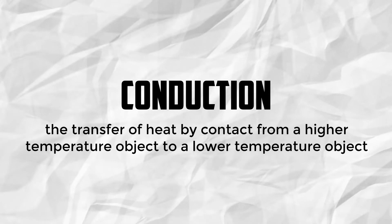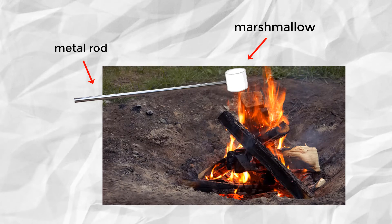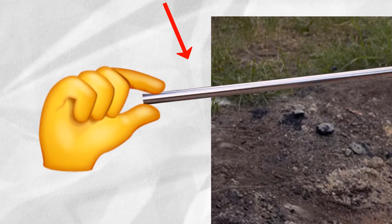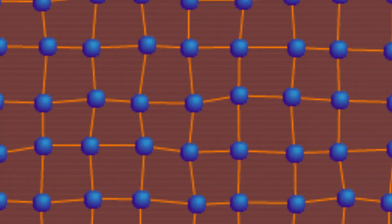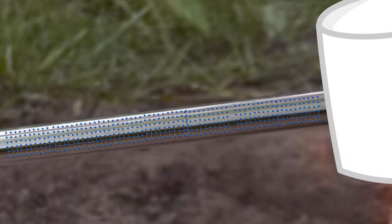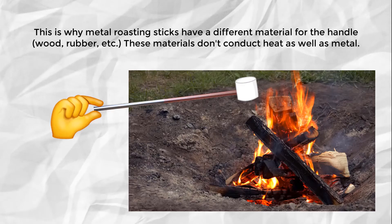Conduction is the transfer of heat by contact, from a higher temperature object to a lower temperature object. This way of heat transfer is most effective with solids. A good example of this is roasting marshmallows with a metal rod. As you hold the metal rod to the fire, the part you hold will continue to get warmer and warmer. This is because the molecules at the end of the metal rod vibrate more rapidly as it is heated by the fire. The vibrating molecules cause the adjacent molecules to vibrate, which causes the molecules adjacent to them to vibrate, and so on, until it reaches the other end of the metal — the one your hand holds.